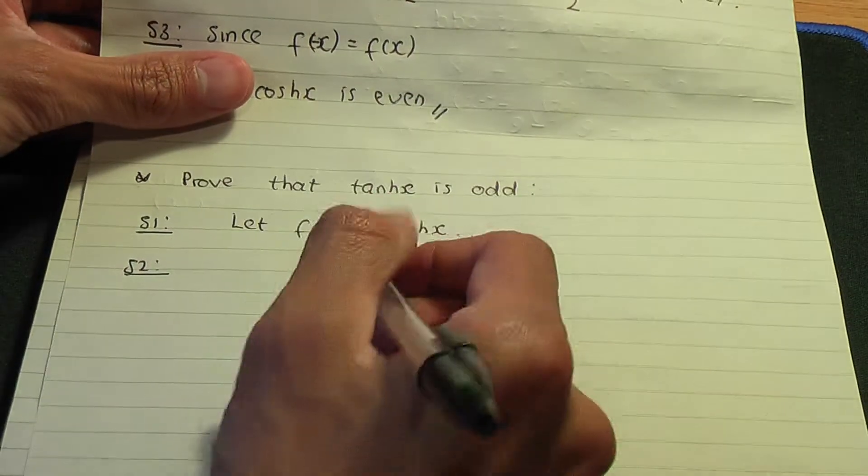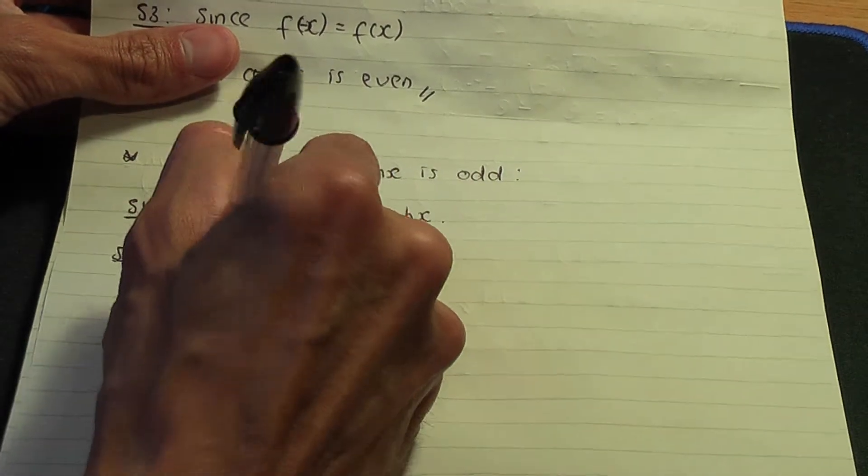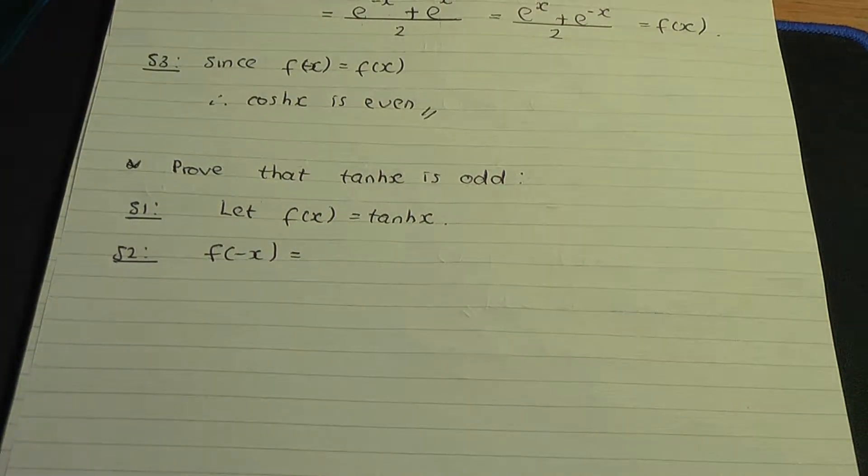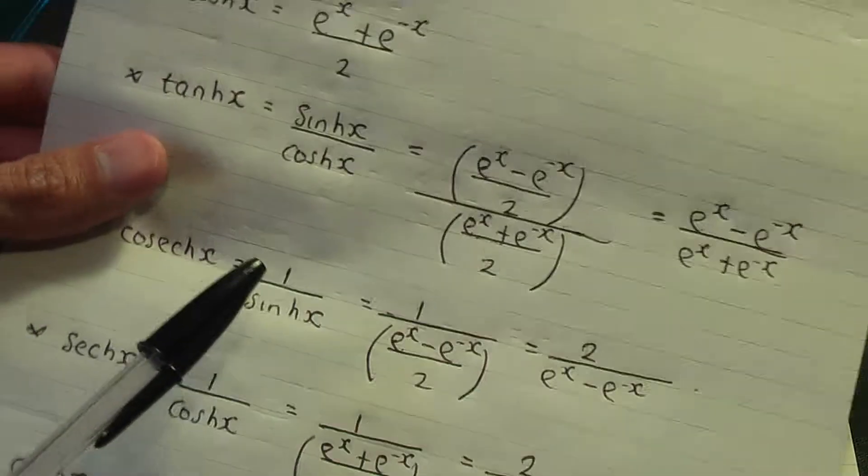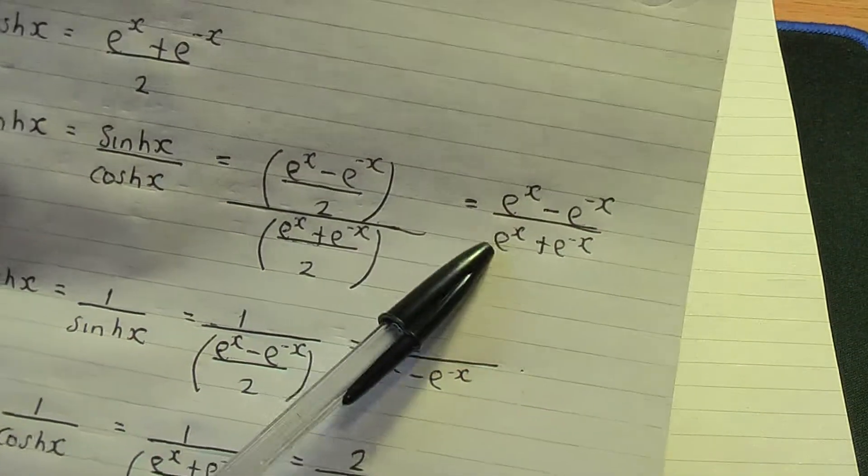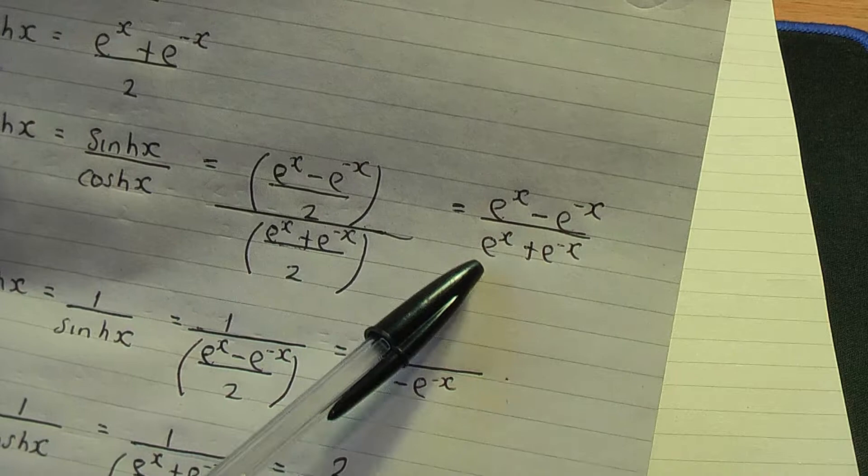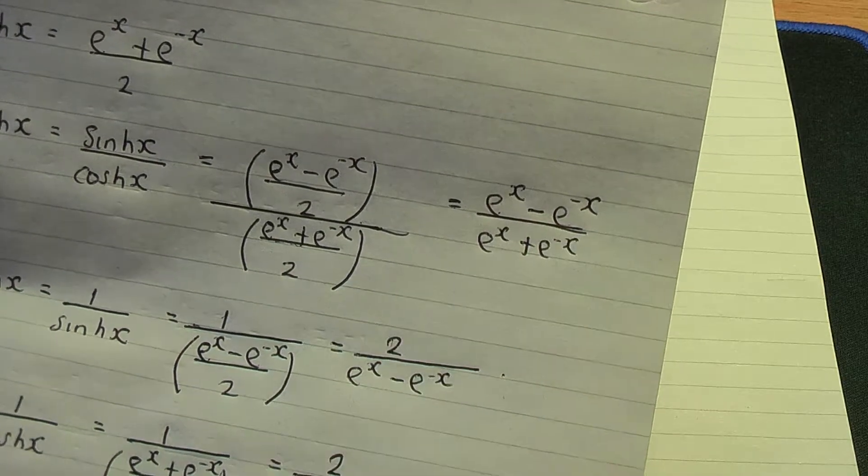Let's start off with f(-x). Referring to our definition of hyperbolic tan, it's e^x minus e^(-x) over e^x plus e^(-x).